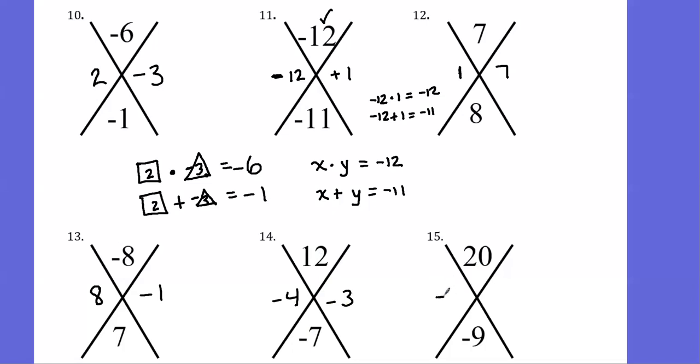On the last one, I should have negative five and negative four. Negative five times negative four gives me positive 20, and negative five plus negative four gives me negative nine.